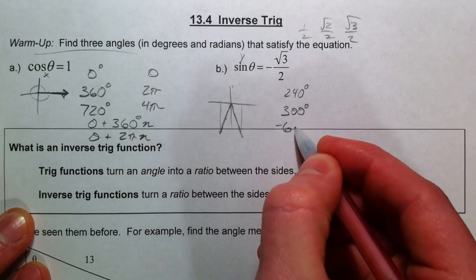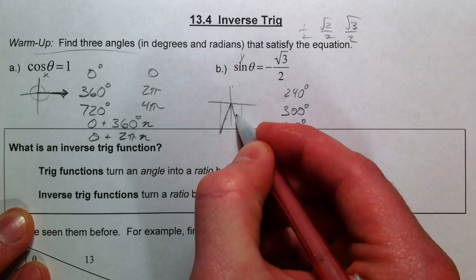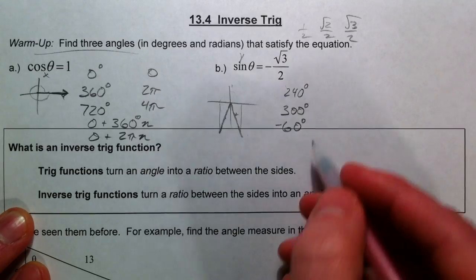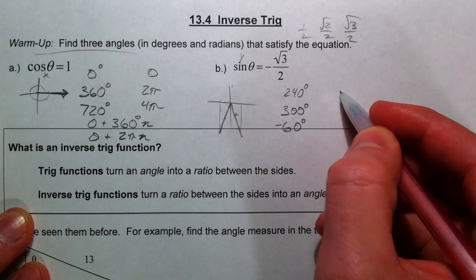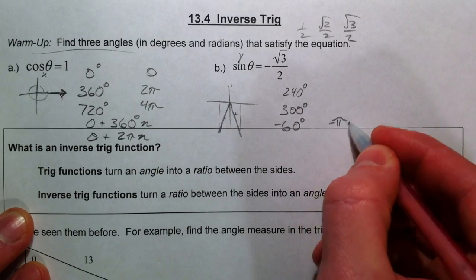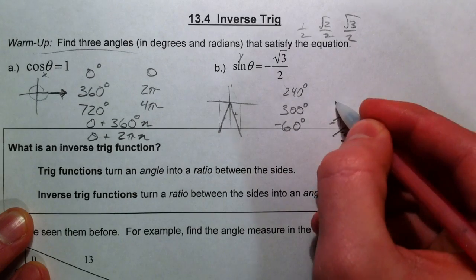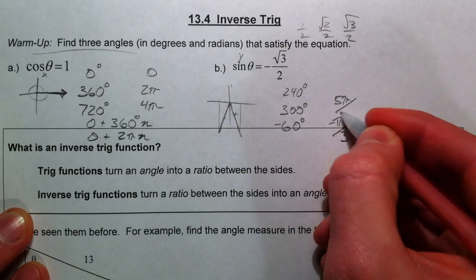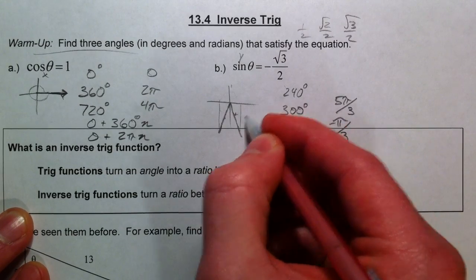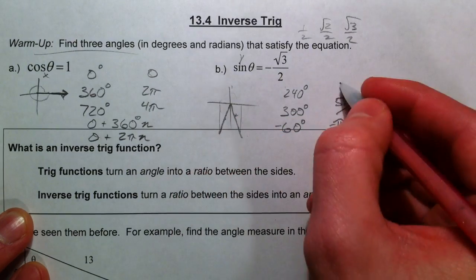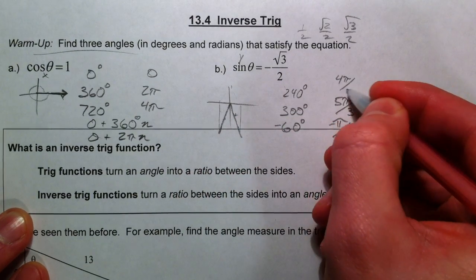You could also do a negative 60, because we could go backwards this way. And in radians, this would be negative pi over three, that would be five pi over three, and then one less, four pi over three.